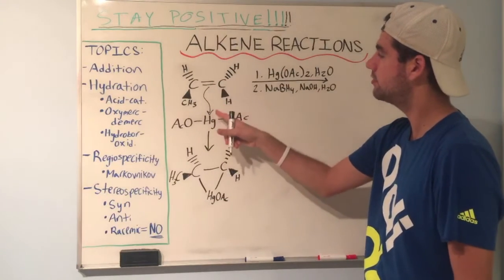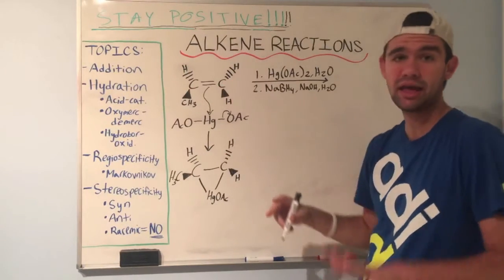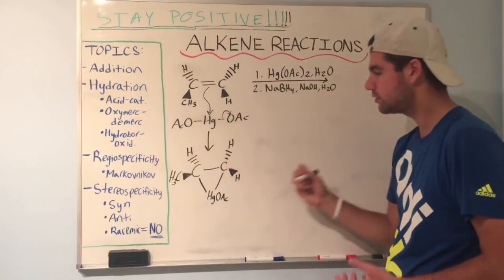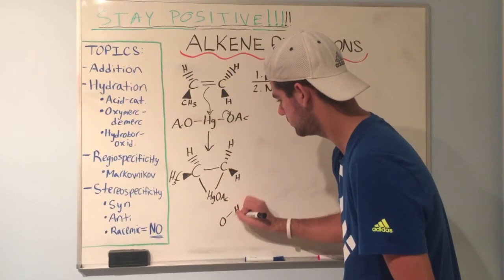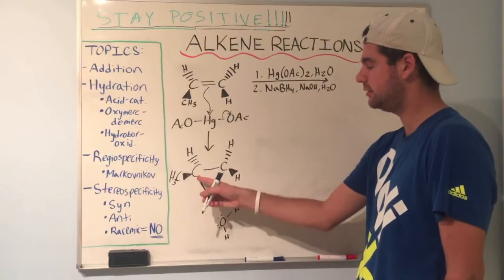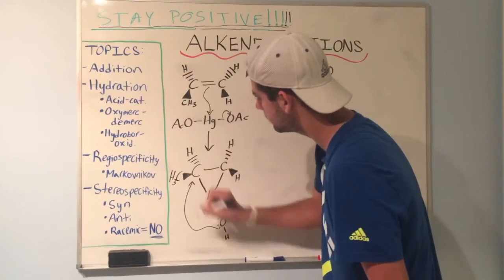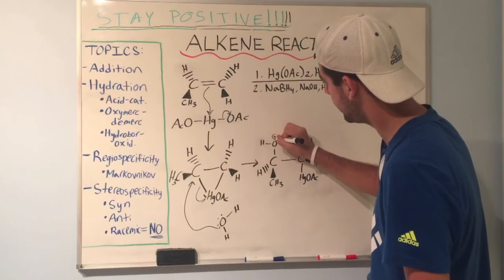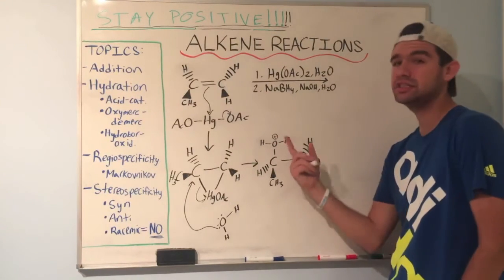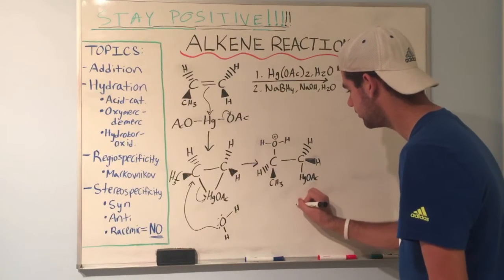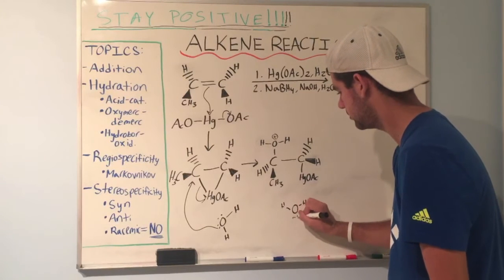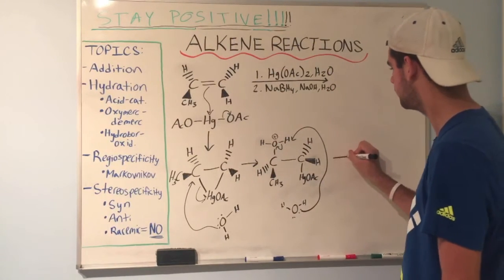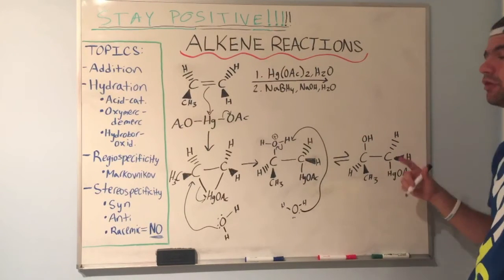As the nucleophilic pi bond attacks the Hg, one of the OAcs leaves — that's why you only see one OAc in the intermediate and not two. From this closed ring, water will attack one of the carbons and open the ring. That leaves us with water attached to that carbon with a plus charge because it has three bonds, and HgOAc on the other. Next, simply deprotonate that water — that gets us to the next intermediate where oxygen has been deprotonated and one thing remains.